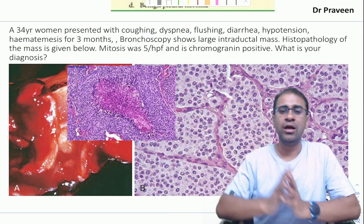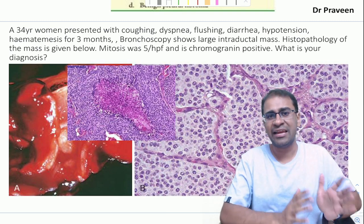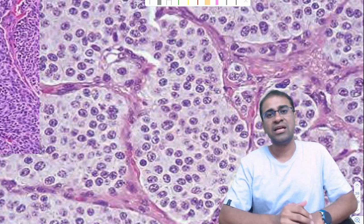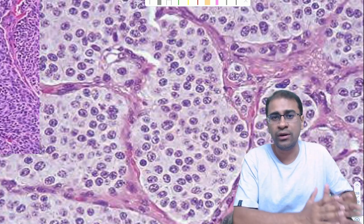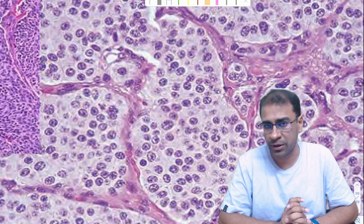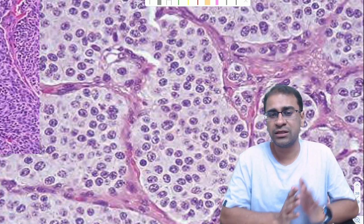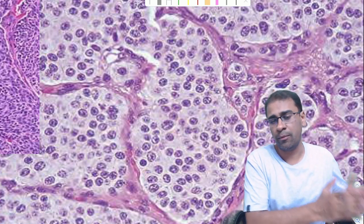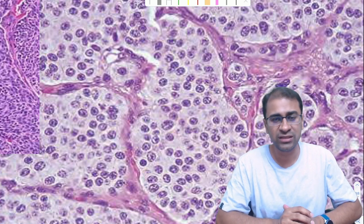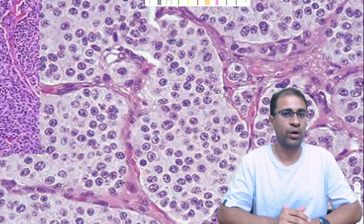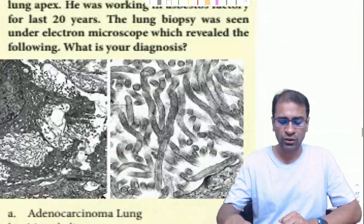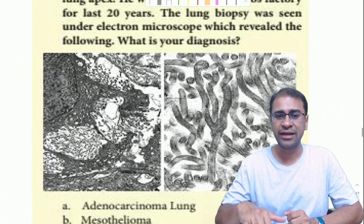Carcinoid tumors show diarrhea, flushing, and cyanosis. Their histology shows tumor nests with salt-and-pepper chromatin cells and neurosecretory granules on electron microscopy. Carcinoids are of two types: typical carcinoid has less than two mitotic figures per high-power field, and atypical carcinoid has more than two, making it more malignant in nature.